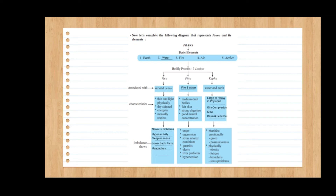Now let's complete the following diagram that represents prana and its elements. We make the tree diagram about prana. The basic elements are five: earth, water, fire, air, and ether. We also show for each dosha: which form it is associated with, its characteristics, and what imbalance shows — those are shown in three columns for Vata, Pitta, and Kapha. That is the solved passage we have seen from those paragraphs — that is called a tree diagram.